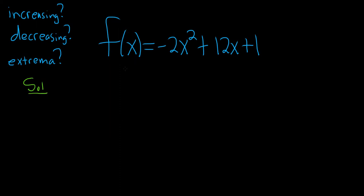So the first step in these problems is to find the critical numbers. Critical numbers are numbers in the domain of the function where the derivative is 0 or undefined. This is a polynomial so its derivative will never be undefined. It will always be defined. So all we have to do is take the derivative and set it equal to 0.